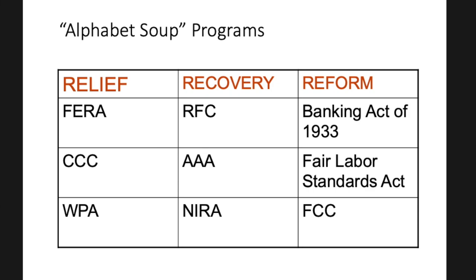The NIRA — National Industrial Recovery Act — also provided funds for large corporations. For the reform strand of the New Deal, the Banking Act of 1933 shut down all banks temporarily to prevent runs on the banks, and established FDIC insurance so deposits would be guaranteed in case of another economic catastrophe. The Fair Labor Standards Act worked on working day hours and other business reforms to restore public trust. And the FCC — the Federal Communications Commission — oversaw radio stations and their programming, and later television.